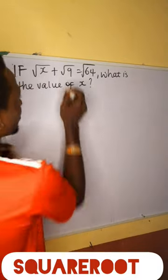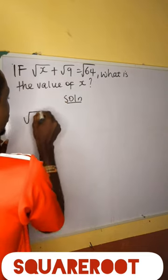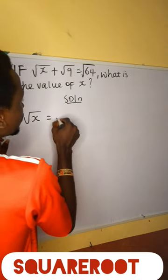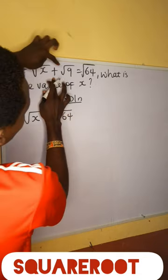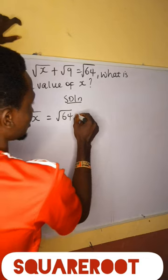Now the first thing to do is move the square root of 9 over here. So the square root of x is now equal to the square root of 64. Positive root 9 crossing over is going to give us negative, so it's going to be negative square root of 9.